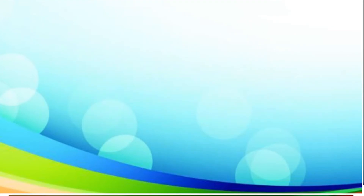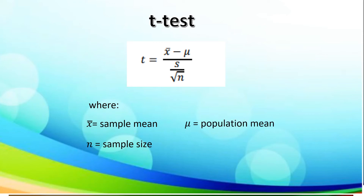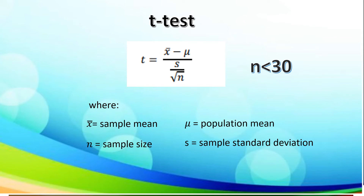Now let's have the formula for T-test. T is equal to x-bar minus mu, over s divided by the square root of n, where x-bar is the sample mean, n is the sample size, mu is the population mean, and s is the sample standard deviation. Remember, T-test should only be applied if the given sample is less than 30.